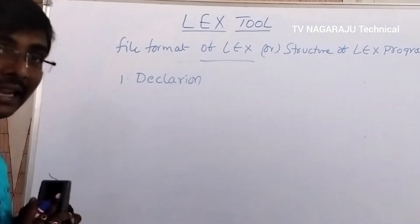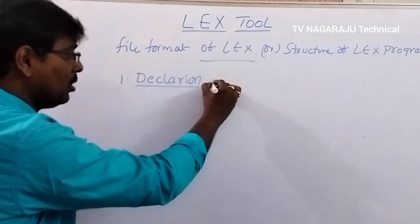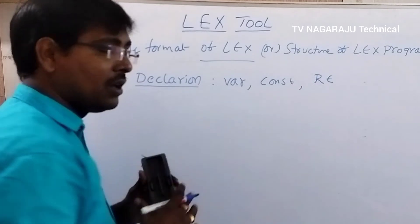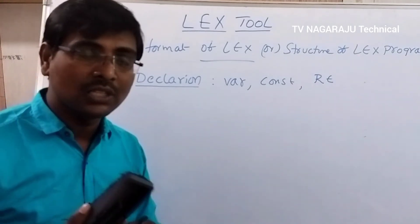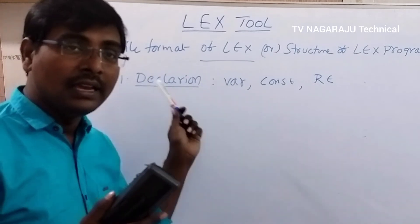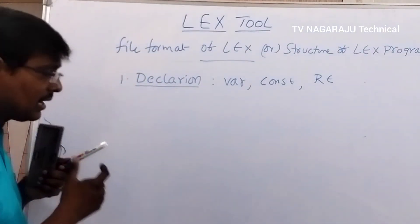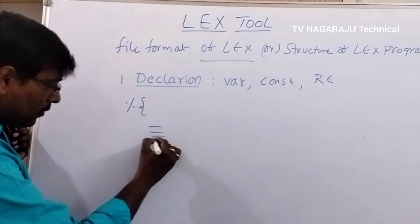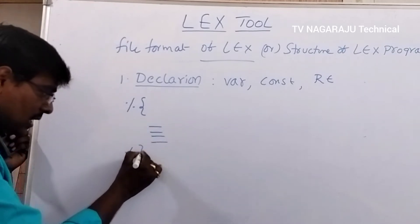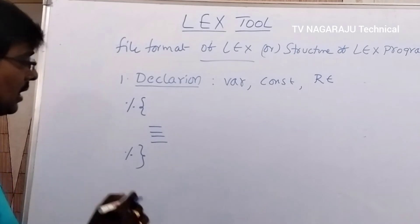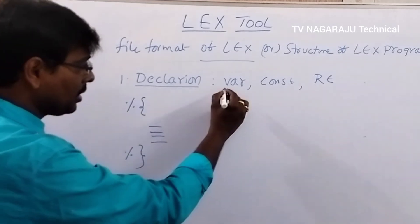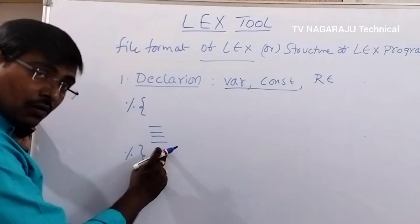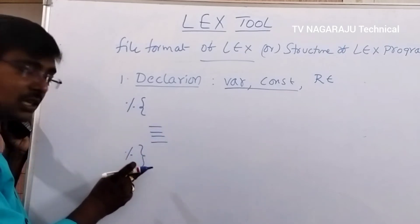In the declaration section, any variables, constants, or regular expressions are declared. Every declaration of variables and constants starts with a percent-open-curly-bracket '%{', contains the set of declarations, and closes with '%}'. For example: '%{ int a; int b = 5; %}' — here a is a variable and b is a constant.